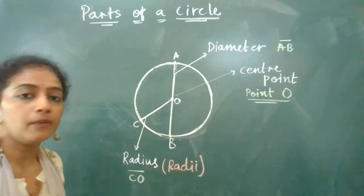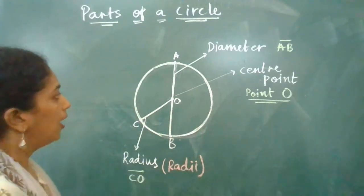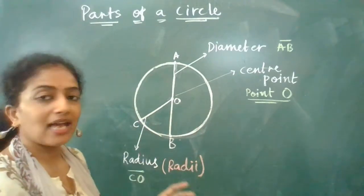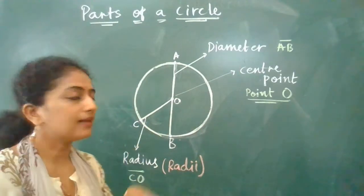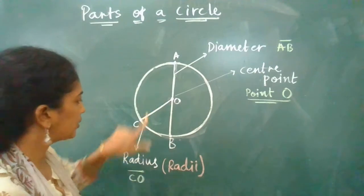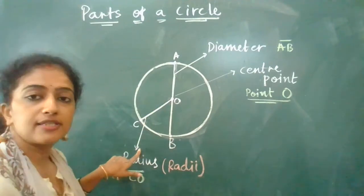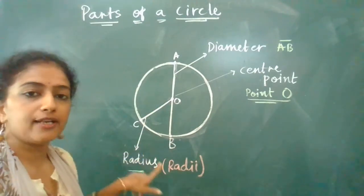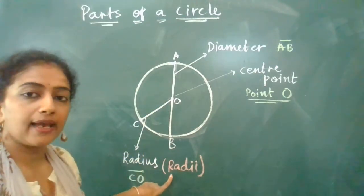So far we have learned three parts: center point, diameter, and radius. One radius is called radius (singular) and the plural of radius is called radii. So here we can get three radii — OA, OC, and OB.